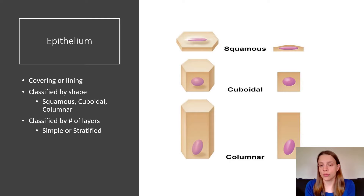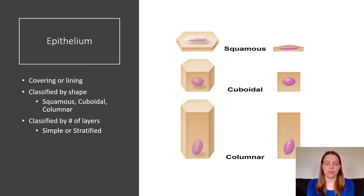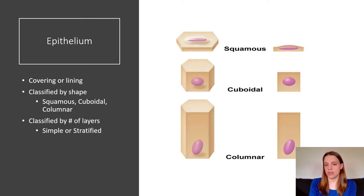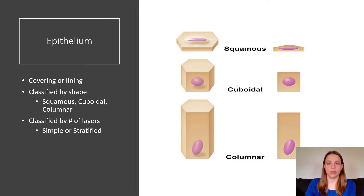We also classify epithelium by its number of layers. We can say it is either simple or stratified. Simple means it has one layer. Stratified means it has more than one layer.